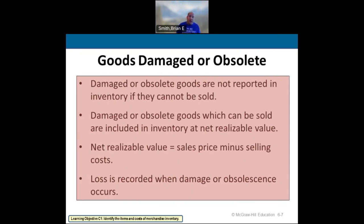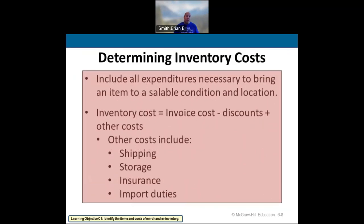Net realizable value is how we identify market value — it's the sales price minus the selling costs. We record a loss if it's a damaged or obsolete situation. For example, if I had iPod 1s — nobody even does iPods anymore — and I have 20 of them in my inventory: if I can sell them, I take the sales price minus selling costs for net realizable value. But if they're obsolete, I just write them off as a loss.